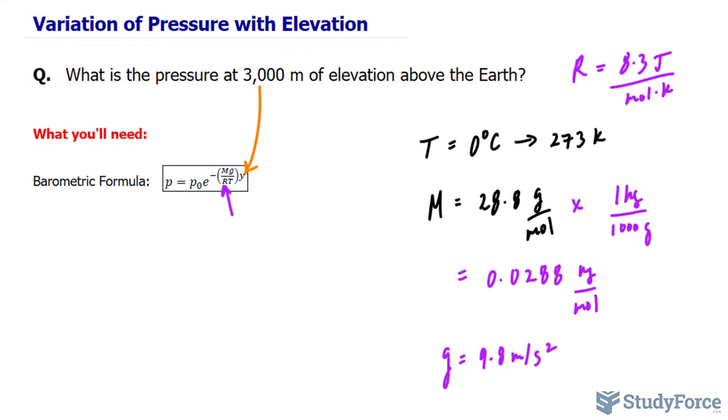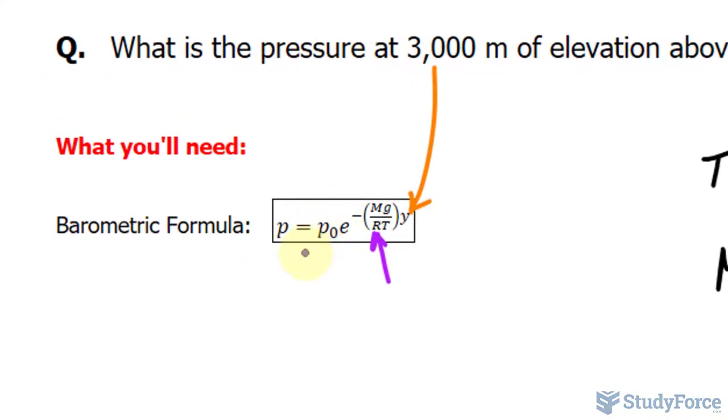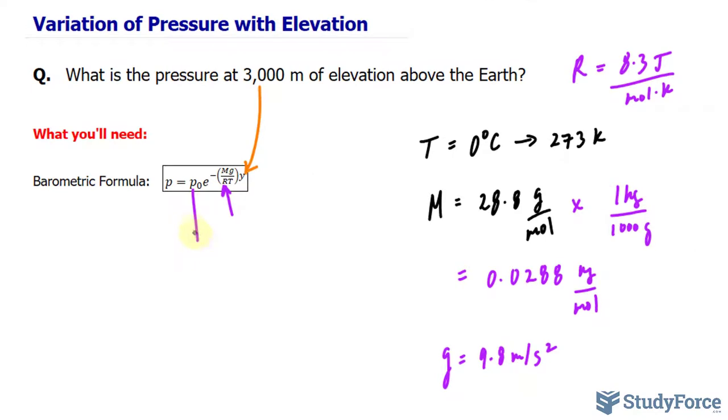So before we put all these numbers into the formula, remember also that the pressure, or the initial pressure, represented as p sub 0, is 1 atmosphere. And remember that atmosphere is a unit of pressure that can be converted into pascals, where 1 pascal is equal to 1 newton per meter squared. Just be mindful of that in case you do not want to use atmospheres as a unit.